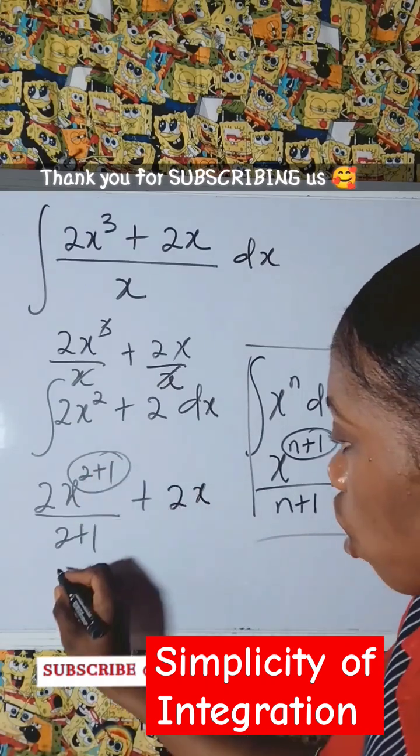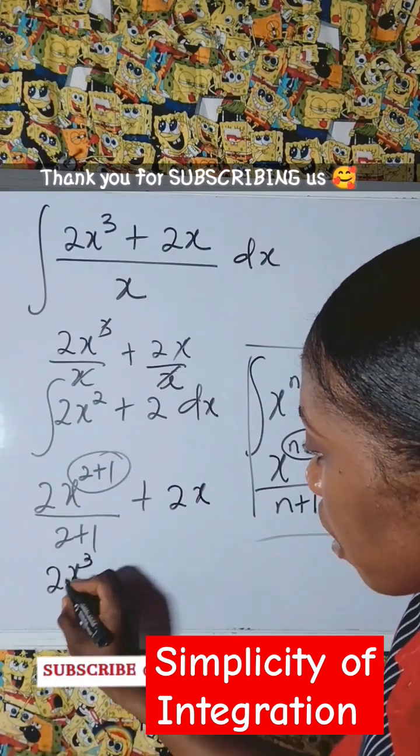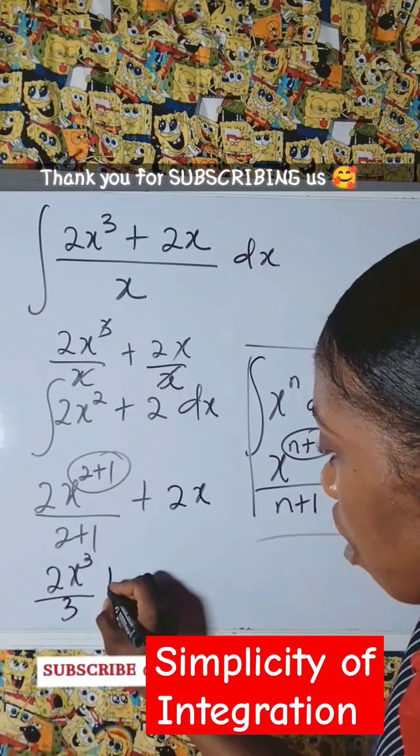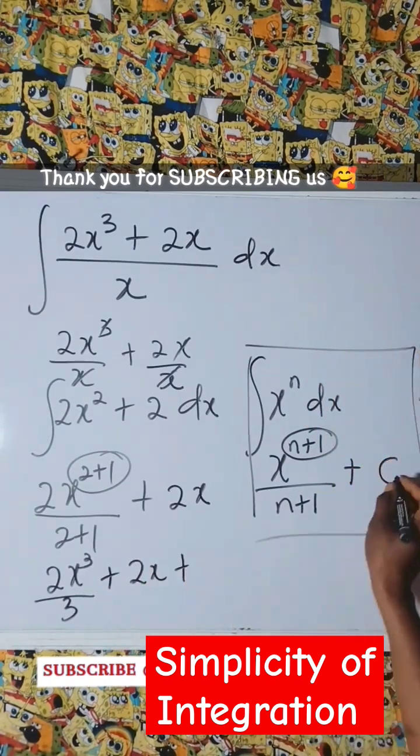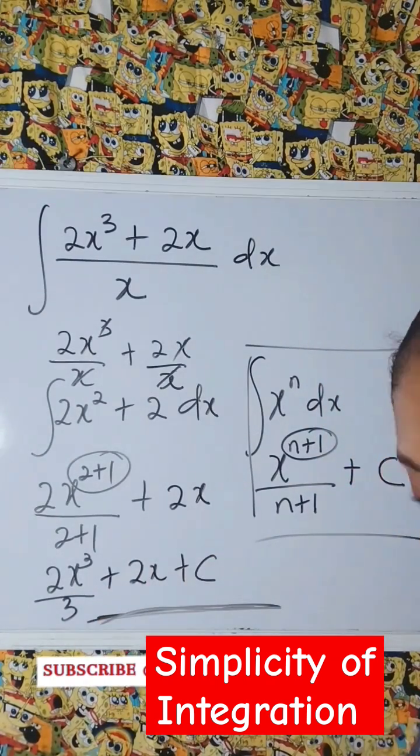So it's going to be 2x raised to power 3 over 3 plus 2x, then plus the constant c. And this is our answer.